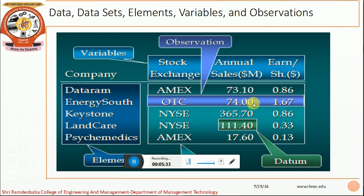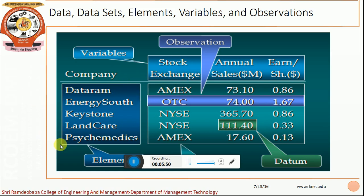This entire one row is called as an observation. Stock exchange is an element, annual sales is a variable, share holdings is a variable. These are the variables which have been considered in our data, and the different companies which have been considered are called as elements.